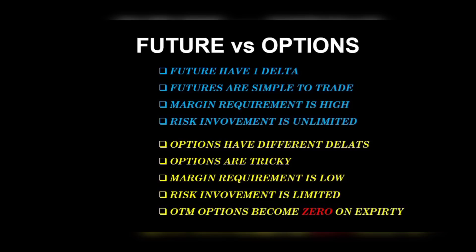In options you can decide a particular stop loss, but it gets tricky. Future margin requirement is high — almost 1 lakh rupees. The risk involvement is unlimited with a symmetric payoff chart. Similarly if you buy options, the risk involvement is limited. If you buy and pay a total premium of 10,000, your risk is limited to that 10,000. But if you trade a put buy and the market continues the other way, the option premium will drop because of time decay — in options there are two components: intrinsic value and time value, and time value always decreases.